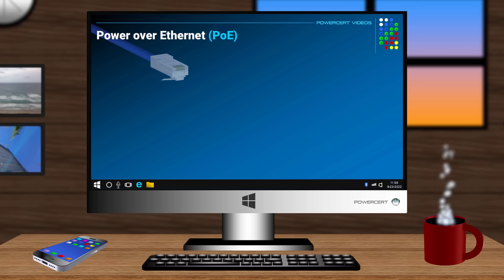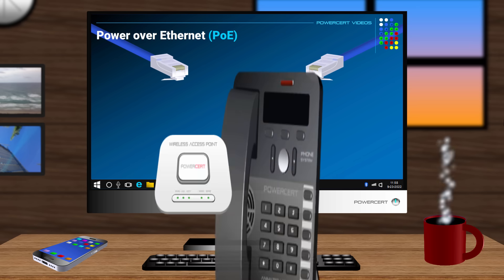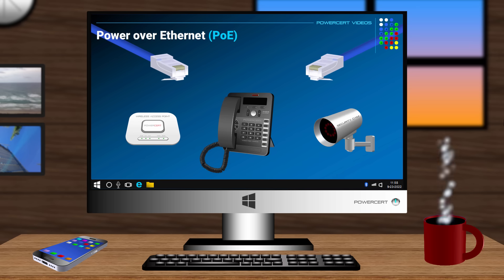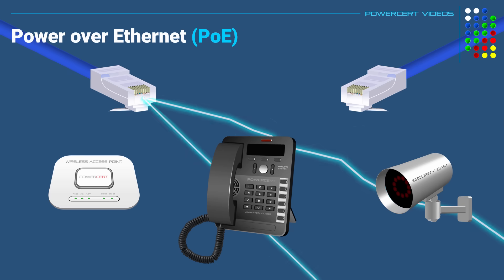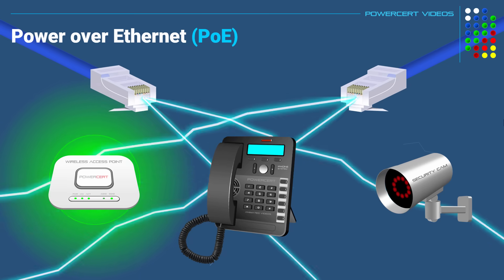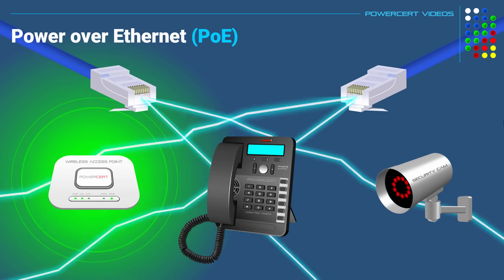Hello everyone. In this video we're going to be talking about power over ethernet. Networking devices need electrical power to function, and that's why they have a separate power cable. But some networking devices don't have a power cable — it's not that they don't need electrical power, it's just that they get their power and data from the same cable, which is the ethernet cable. This technology is called PoE, which stands for power over ethernet, and it adds convenience to networking devices.